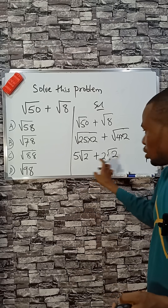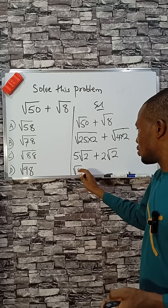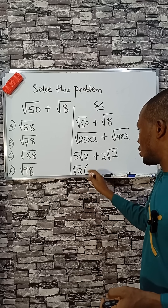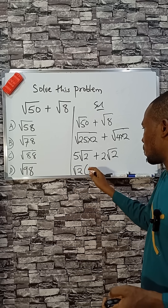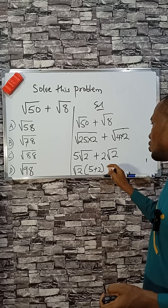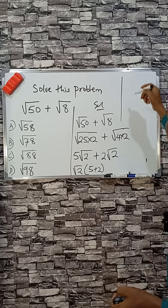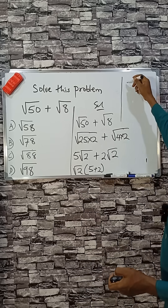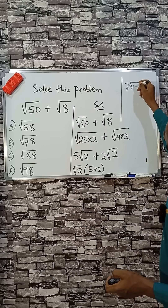Now I have root 2 in common, so we can factorize. That gives us 5 plus 2, which equals 7. So the answer is 7 root 2.